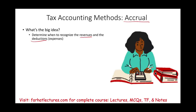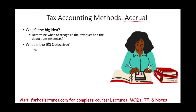Deductible means it gives us a tax deduction, which is good. The IRS wants us to recognize revenue as soon as possible and delay the expenses, because the job of the IRS is to raise money for the government. You do that by delaying the expenses and accelerating the taxpayer's recognition of revenue.